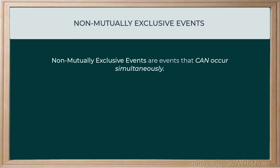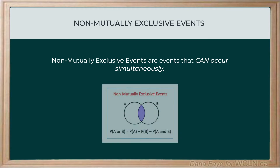When we have a set of events that can occur simultaneously, we describe them as being non-mutually exclusive. That means that when I represent the favorable outcomes on a Venn diagram, these sets are going to intersect — meaning they have favorable outcomes in common.